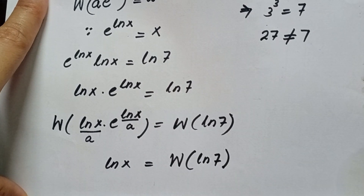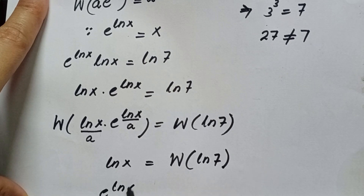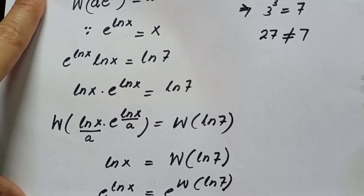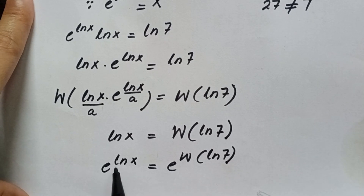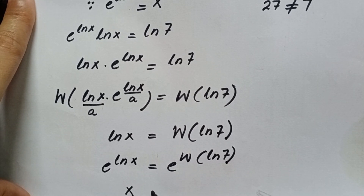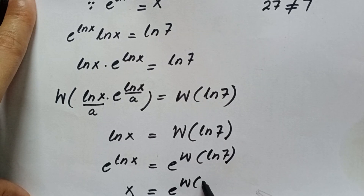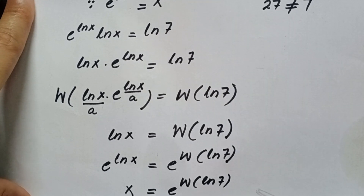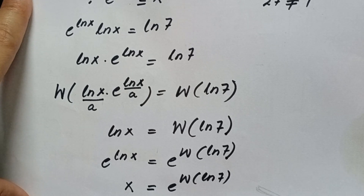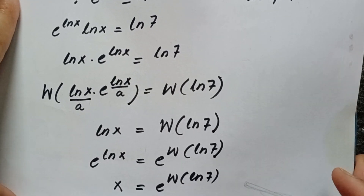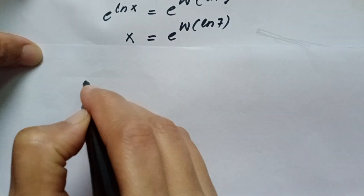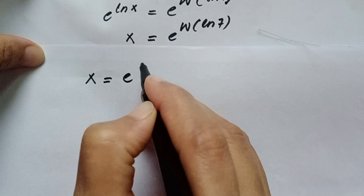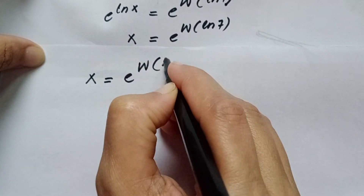We take base e on both sides: e^(ln x) = e^(W(ln 7)). Since e^(ln x) = x, we have the final answer: x = e^(W(ln 7)).